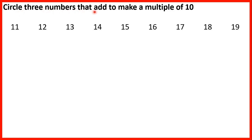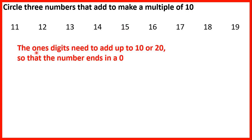Circle three numbers that add to make a multiple of 10. A multiple of 10 is a number in the 10 times table, and all multiples of 10 end in a 0. So the ones digits of the numbers that we circle need to add up to 10 or 20 so that the number ends in a 0.